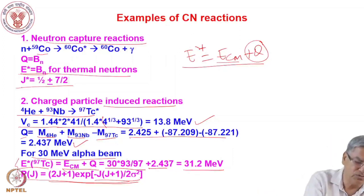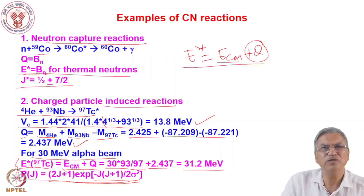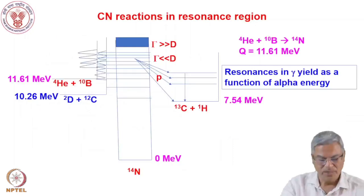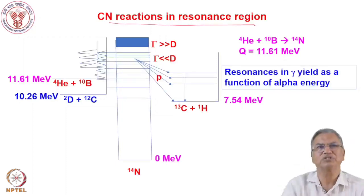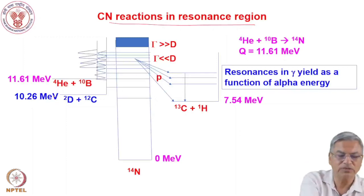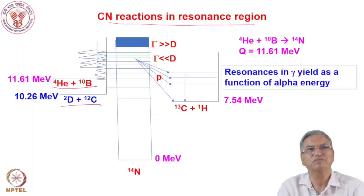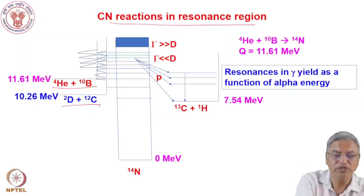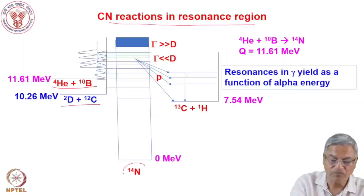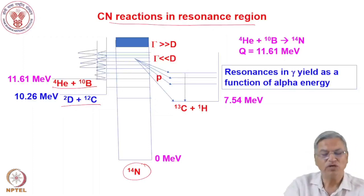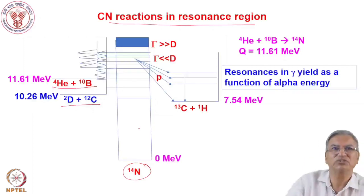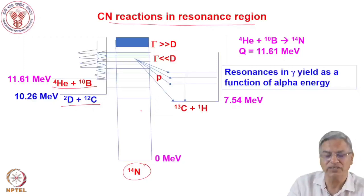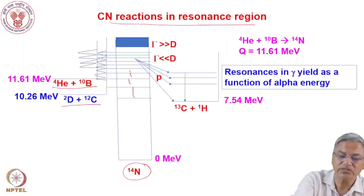We will now discuss the compound nucleus behavior in two regions. The compound nucleus can be formed by two different reaction routes — for example, alpha on boron-10 and deuterium on carbon-12 both form nitrogen-14 as the compound nucleus. For low-mass projectiles and targets, the excited states are discrete, analogous to shell model states, with large gaps between them.